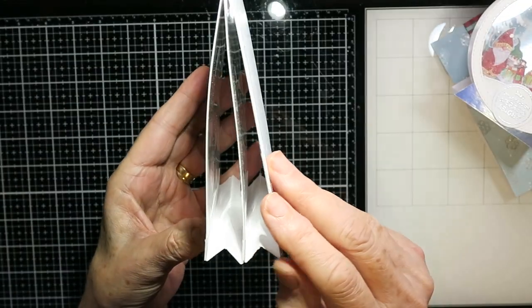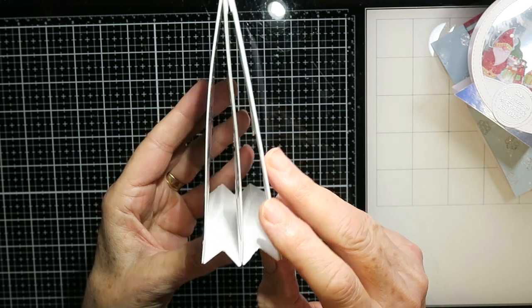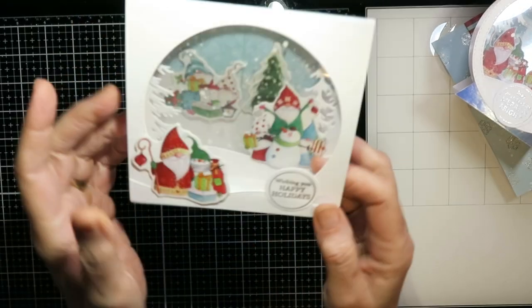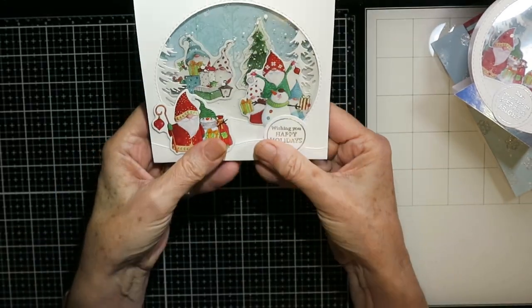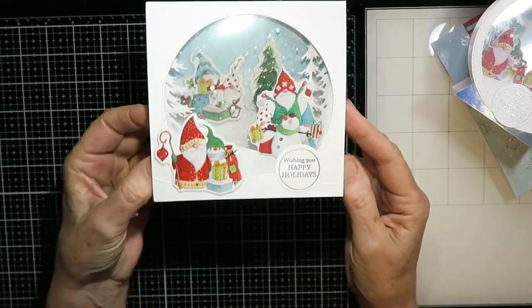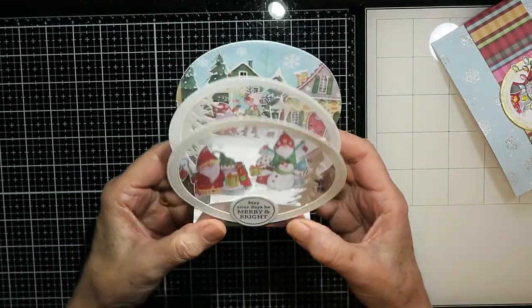So this is a double tent fold card. The inside has some acetate and so does the front. There's room to write on the back. It does fold down flat relatively and it will stand up. So that's just kind of fun.